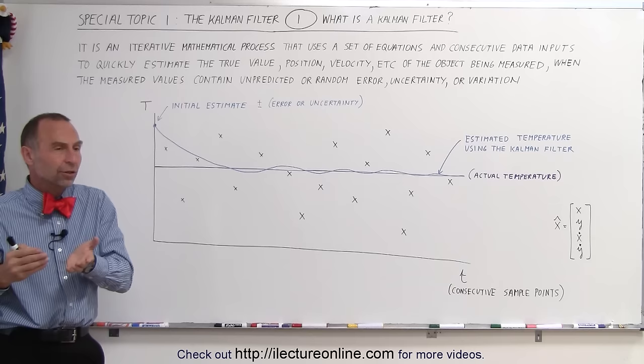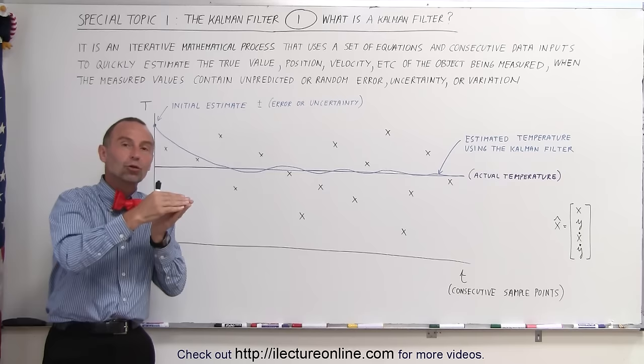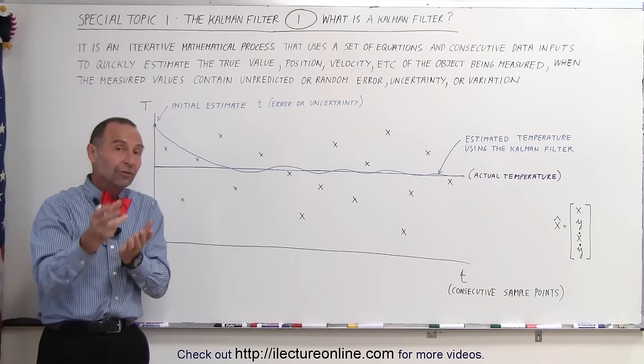But in order to do that we need to have a whole bunch of inputs already. The Kalman filter doesn't wait for a whole bunch of inputs. It very quickly starts to narrow in to the true value by taking a few of those inputs and by understanding the variation or the uncertainty of those inputs, those data inputs.